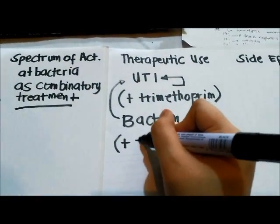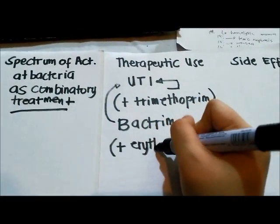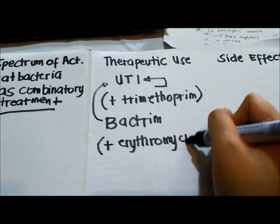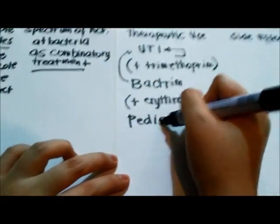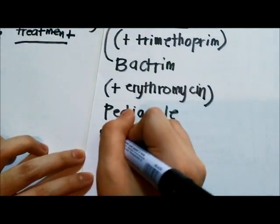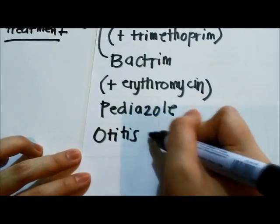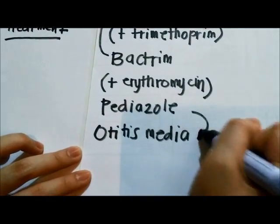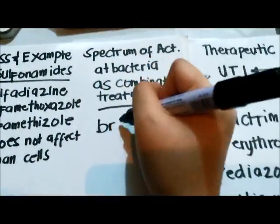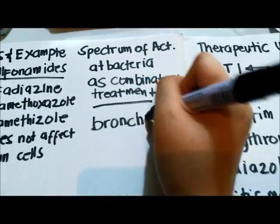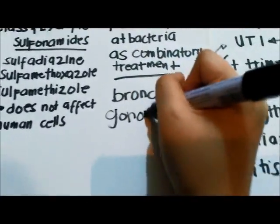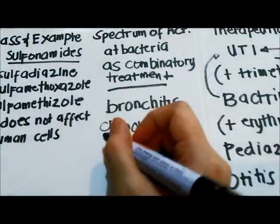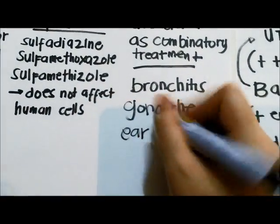In other cases, we can combine sulfonamides with erythromycin, and this combination is termed Pediazole. Pediazole is used to treat otitis media, which is a common disorder in the ear of children or infants. Combinatorial therapy of sulfonamides with trimethoprim and erythromycin is used for the treatment of bronchitis, gonorrhea, different ear infections, and so on.